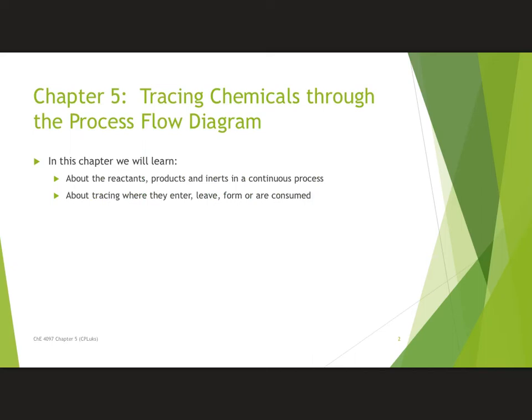Chapter 5 is called Tracing Chemicals Through the Process Flow Diagram. What we want to do is look at tactics for figuring out where reactants, products, and inerts are in a continuous process — where they're entering, where they're leaving, where they get consumed, and where they're formed.